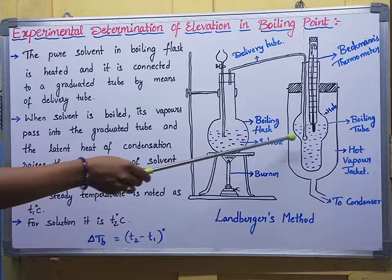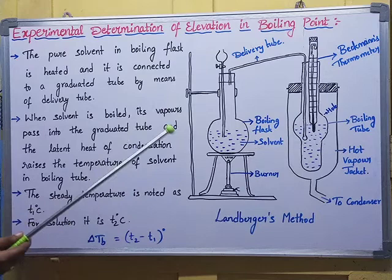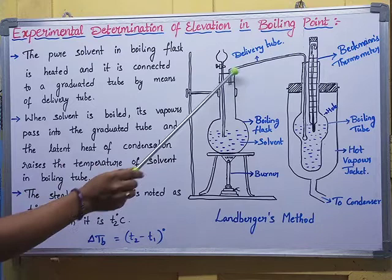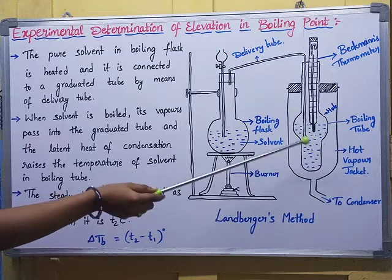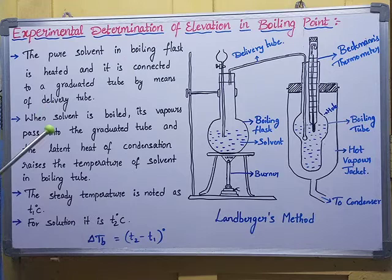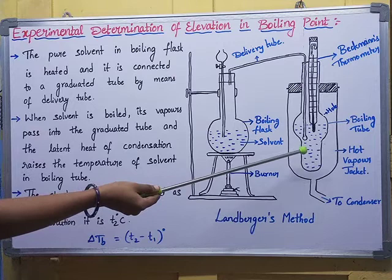Next, the same process is repeated by taking the solution — that means we add a non-volatile solute to the solvent. Again, we heat the pure solvent in the boiling flask, vapors are generated and passed through the delivery tube to this container. These vapors boil the solution, and the solution converts into vapors at a particular temperature, recorded as T2 degrees centigrade. The solution's boiling point is higher than the solvent's boiling point because the solution contains both solute and solvent, and to break the attractive forces between them we require more temperature.